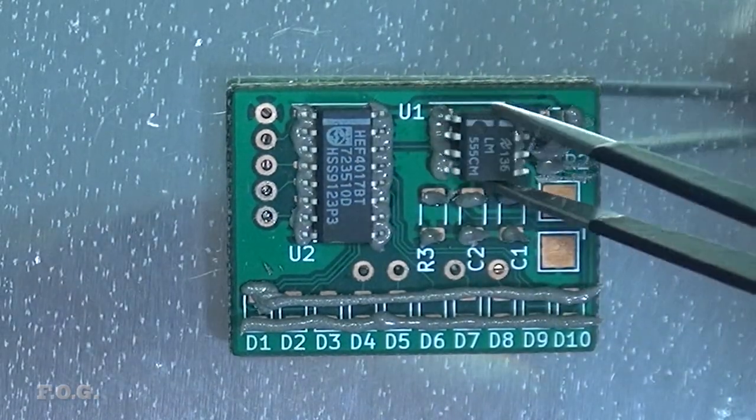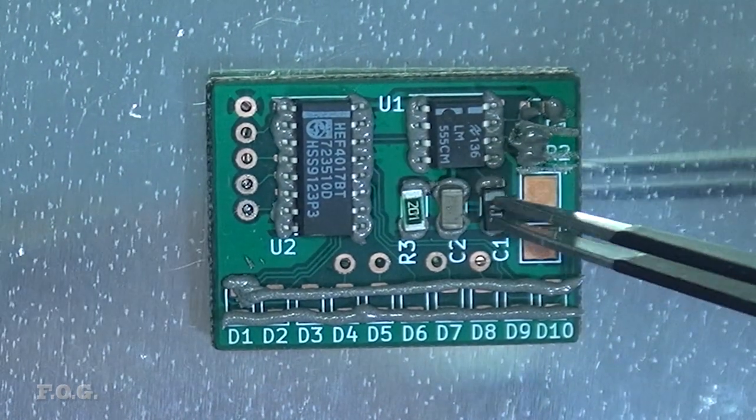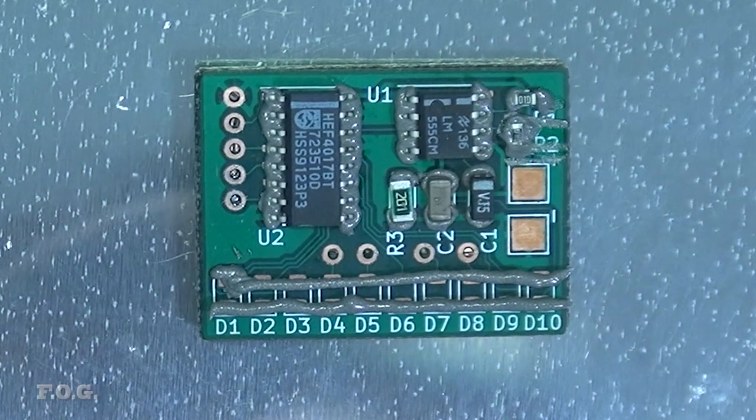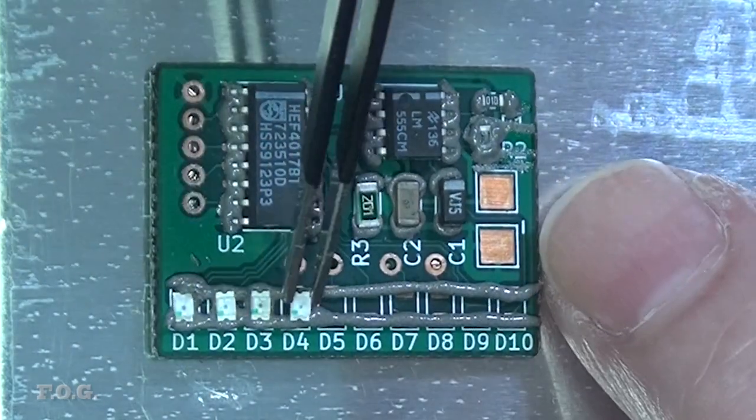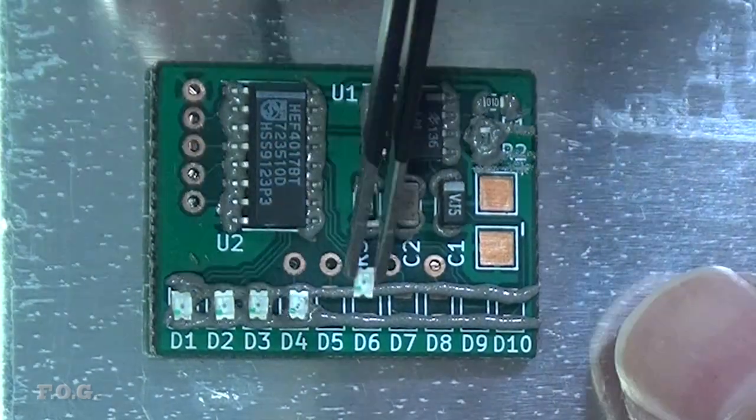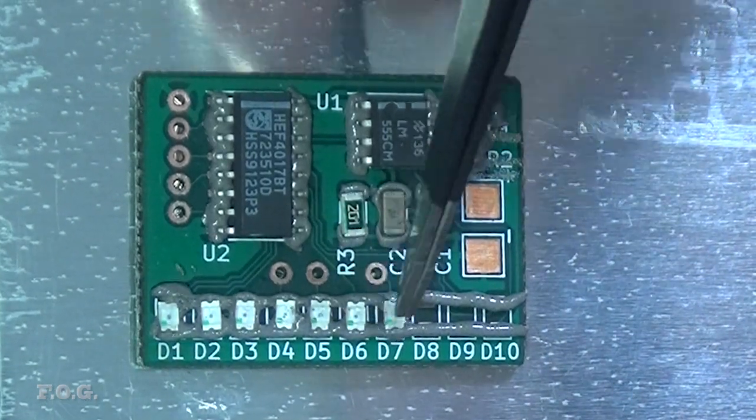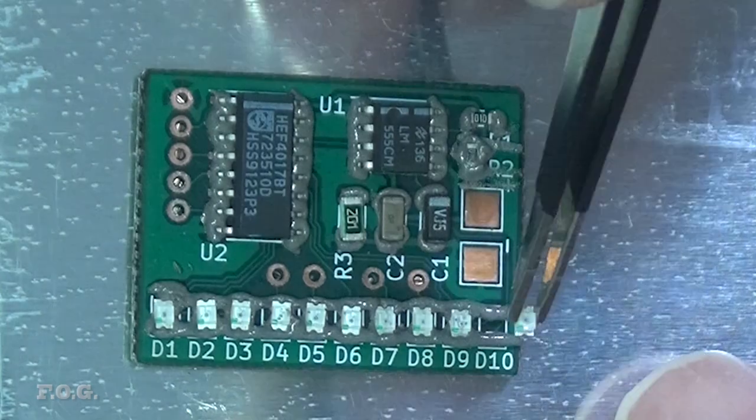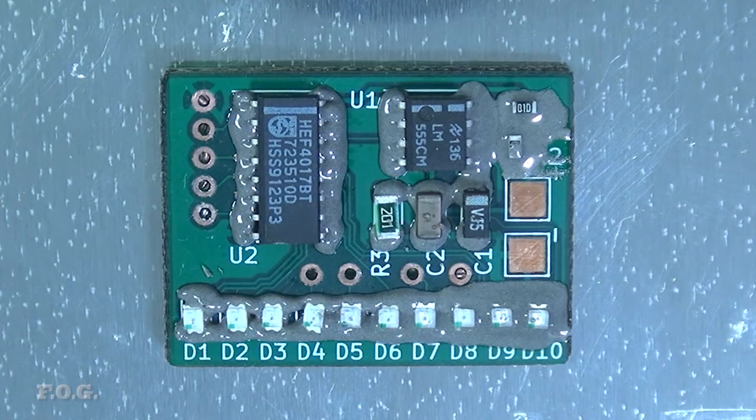Placing the SOP chips first. 1206 components next. Now these 0603 resistors really are tiny. And finally, these 0805 red LEDs. Actually, I noticed these LEDs have a tiny little green dot on one side to identify the cathode. That helps out a lot. And that's it.